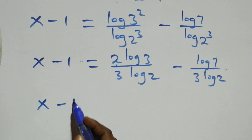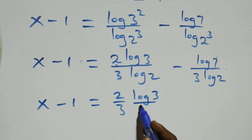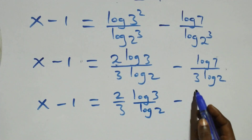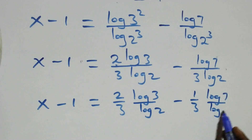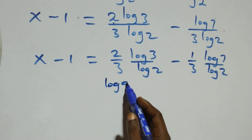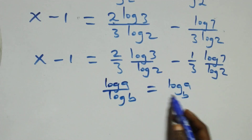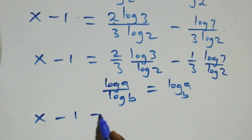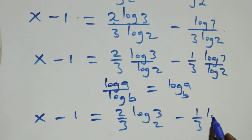Which implies x minus one equals 2 over 3 times log 3 over log 2, minus 1 over 3 times log 7 over log 2. Applying the change of base formula — log a over log b is the same as log a to base b — we have x minus one equals 2 over 3 times log 3 base 2, minus 1 over 3 times log 7 base 2.